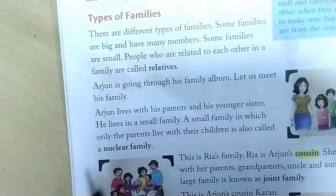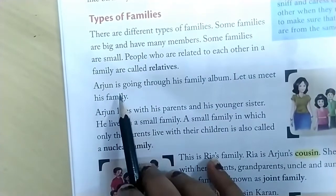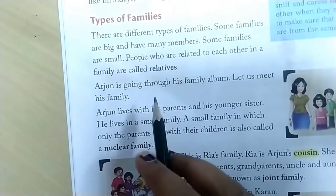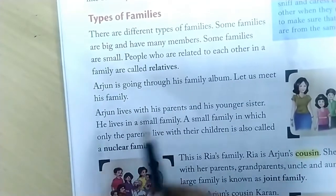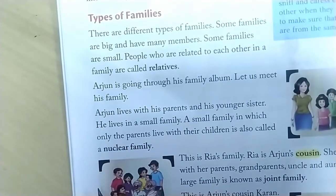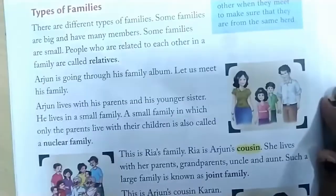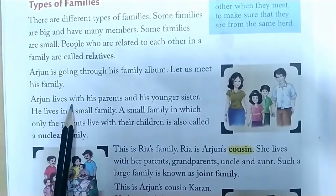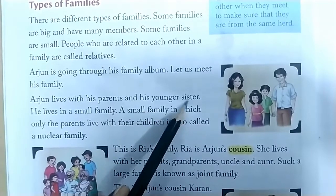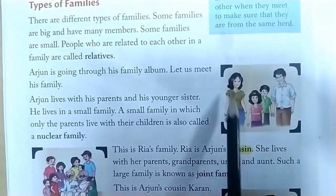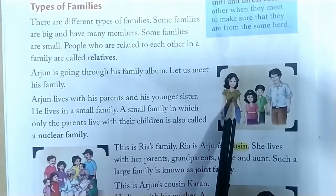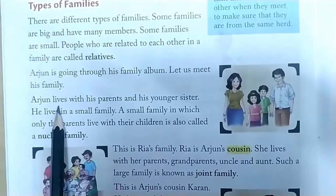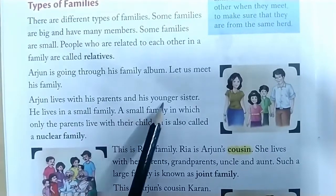Arjun is going through his family album — he is looking at his family album. Let us meet his family. Arjun lives with his parents and his younger sister. This is Arjun's mother, this is Arjun's father, and this is Arjun's sister — only four people in this picture.